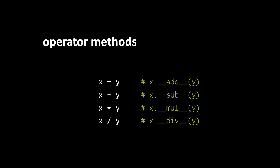And the first operand of the plus sign becomes the instance of this method call, and the second operand gets passed into the method. So x plus y becomes x.__add__ with the argument y.